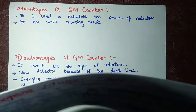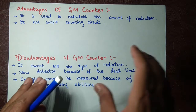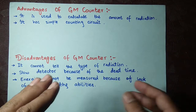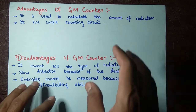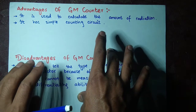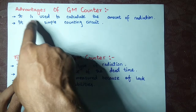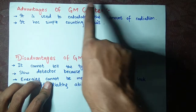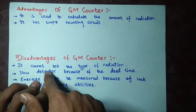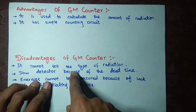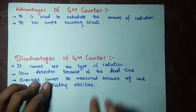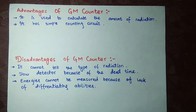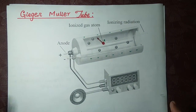Now we will talk about the advantages and disadvantages of the GM counter. I will tell you the main ones. The first advantage is that it is used to calculate the amount of radiation. However, it cannot tell or calculate the type of radiation — it only tells the amount.